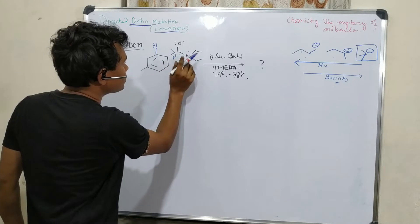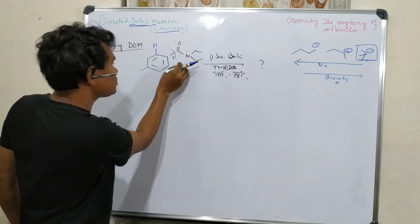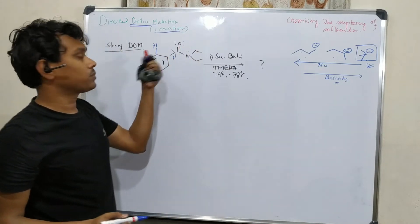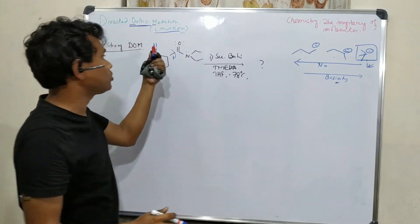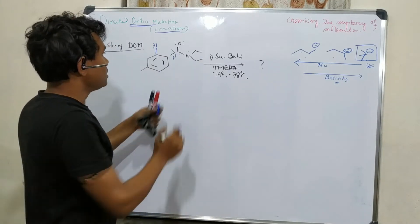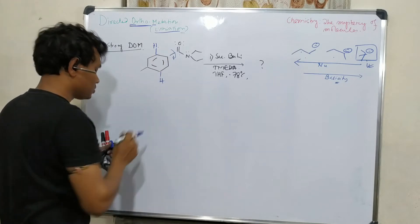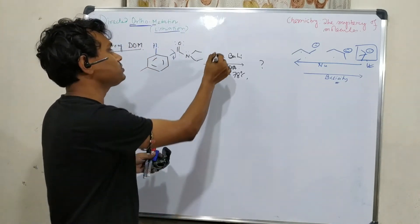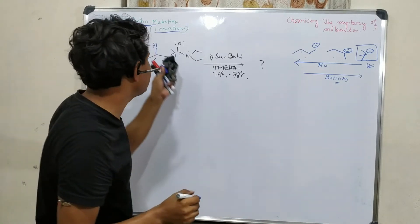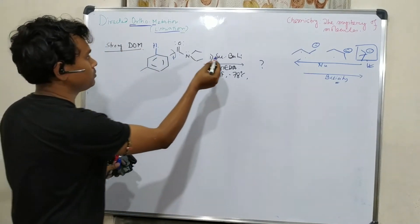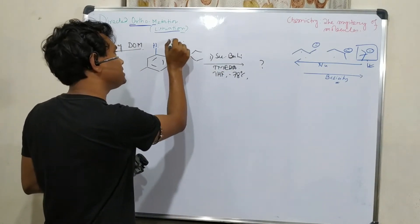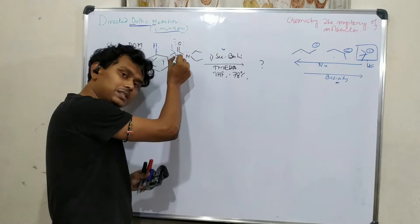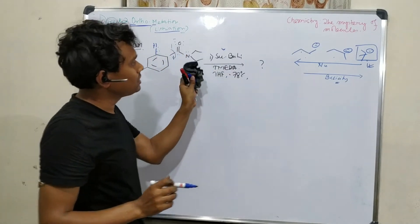Because this bond can rotate, the tertiary butyllithium may abstract a proton from the wrong position, resulting in a mixture. That's why it is very important to choose the proper reagent. Secondary butyllithium is chosen because it does not attack the carbonyl group but selectively abstracts the ortho proton. That is the main reason for choosing secondary butyllithium.